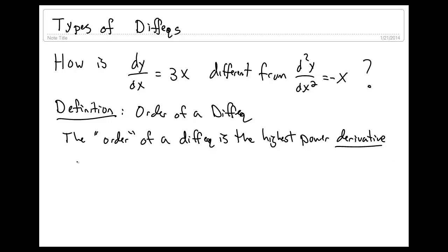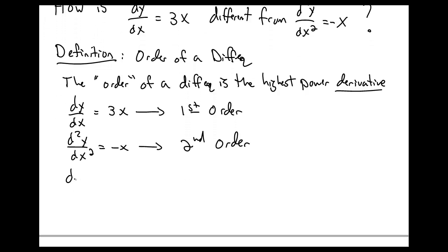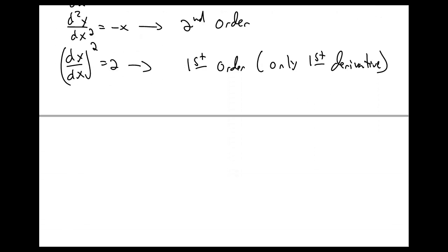For example, dy/dx equal to 3x is a first order equation. In contrast, d²y/dx² equal to negative x is actually second order because it has a second order derivative. dy/dx squared equal to 2 is actually still first order because it only has a first derivative in there, even though there's a square in there. It's still only first order.